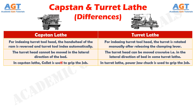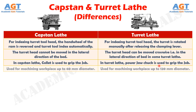In capstan lathe, a collet is used to grip the job, whereas in turret lathe, a power jaw chuck is used to grip the job. Capstan lathes are used for machining workpieces up to 60 mm in diameter, whereas turret lathes are used for machining workpieces up to 120 mm in diameter.